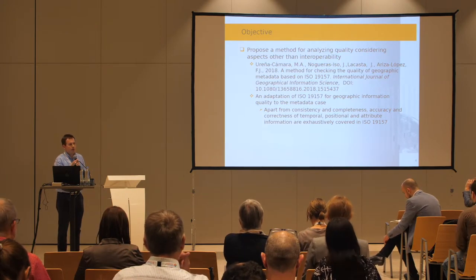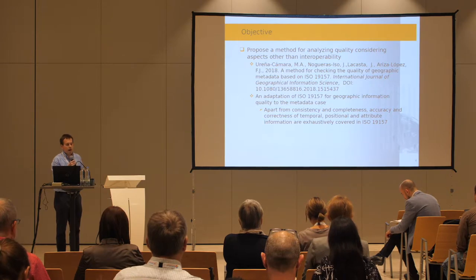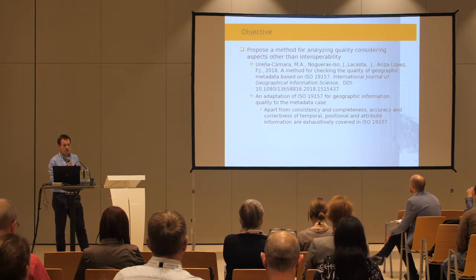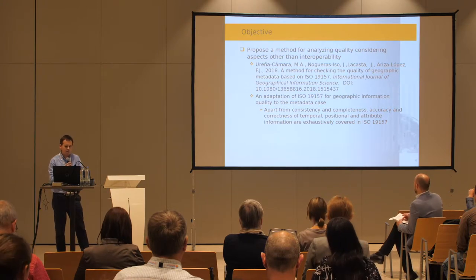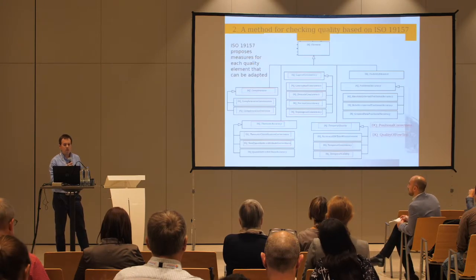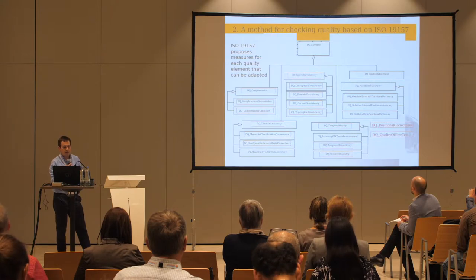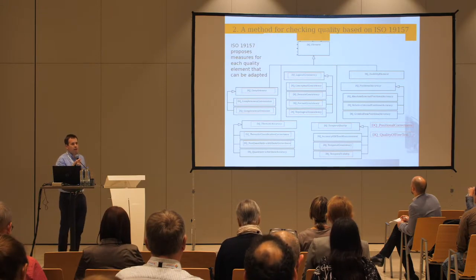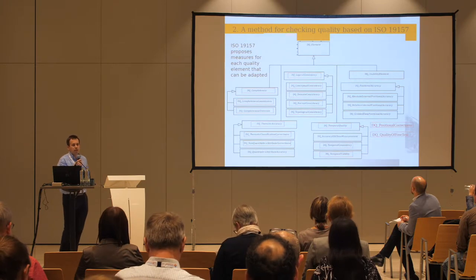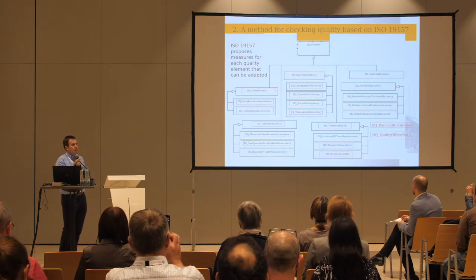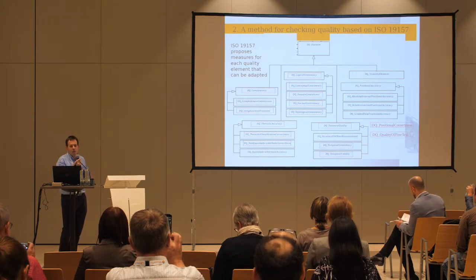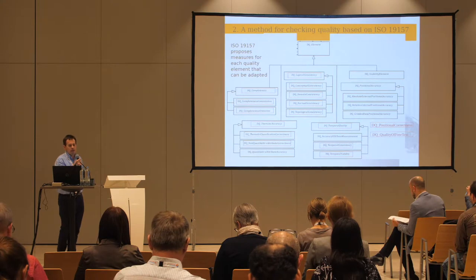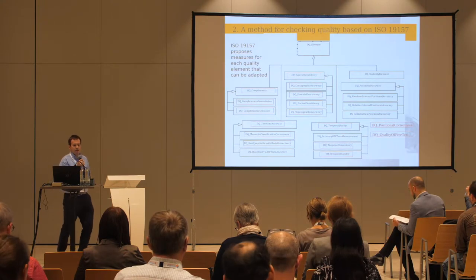ISO 19157 is a standard for geographic information quality, and we have adapted this standard to the metadata case. Apart from consistency and completeness, accuracy and correctness of temporal position and attribute information are specifically covered in ISO 19157. Here we have a diagram with all the quality elements studied in this standard for spatial information, and we have adapted the quality elements remarked in red.